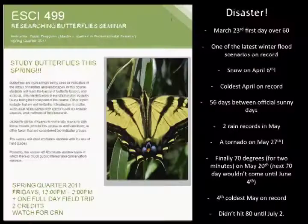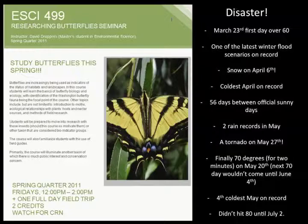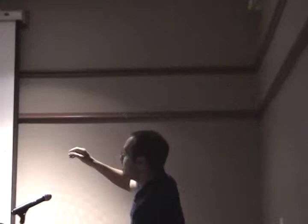A tornado on May 27th. Finally 70 degrees for two minutes on May 20th — the next 70-degree day wouldn't come until June 4th, which is when we're getting out for summer break. Fourth coldest May on record. Didn't hit 80 until July 2nd. The joke was that the title was actually 'Researching Butterflies and Rain.' We had one field trip. But the fact that I did teach a butterfly course in 2011 says you can teach at any time.